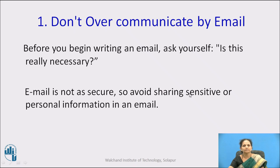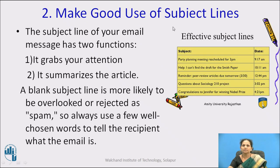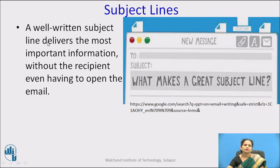Avoid sharing sensitive or personal information in an email, because email is not as secure. The next rule is make good use of subject lines. The subject line of your email message has two functions: first, it grabs the reader's attention, and second, it summarizes the content. A blank subject line is more likely to be overlooked or rejected as spam, so always use a few well-chosen words to tell the recipient what the email is about.